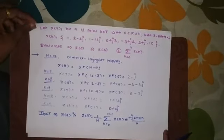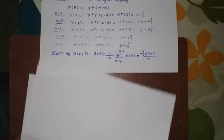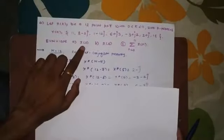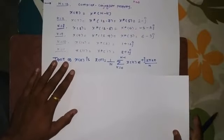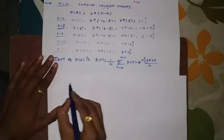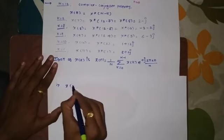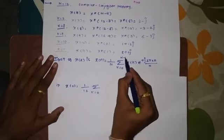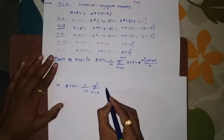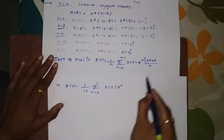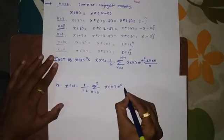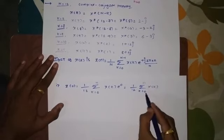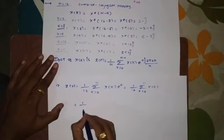The first value they ask for is x(0). We find x(0) by putting small n equal to 0 in the IDFT equation. We get x(0) equals 1 by 12, summation from K equal 0 to 11, of X of K times e raised to 0. Since e raised to 0 is 1, it simply becomes 1 by 12 times the summation of X of K from 0 to 11 — that is, the addition of all X of K values.